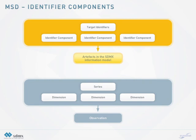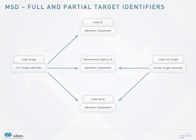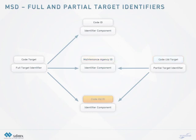This is a similar principle as on the data side where the individual dimensions serve to identify the observation value, except that for metadata the artifact that is identified can be any artifact in the SDMX information model and not restricted to the observation value. The full target identifier specifies all of the identifier components in the scope of this MSD, whilst the partial target identifier identifies a subset of the identifier components to which metadata attributes may be attached. Each partial target identifier must contain only those identifier components required to identify a single SDMX artifact. For example, if it is required to attach metadata to either a code or a codelist, then there must be two target identifiers specified: one that contains the identifier components for a codelist, the maintenance agency identifier and the codelist identifier, and one that contains the identifier components for a code, the maintenance agency identifier, the codelist identifier and the codelist identifier.